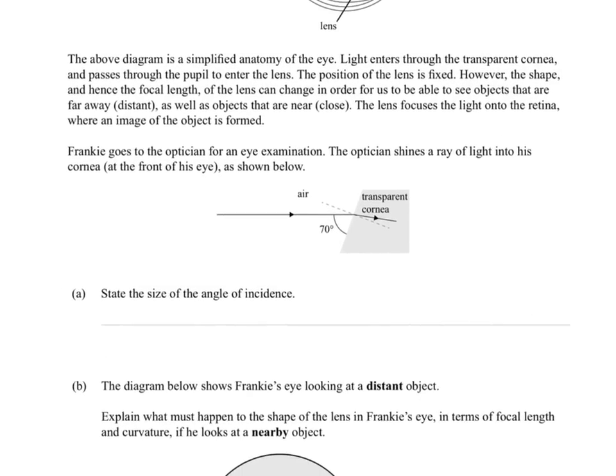Nice easy one to start. State the size of the angle of incidence. There is actually a minor calculation because remember the angle of incidence is this one here between the normal and the incoming ray. It's 90 degrees, that's why it's called a normal. So there's 20 degrees required to add to the 70 degrees to make it up. So it's a simple calculation state.